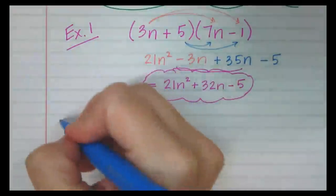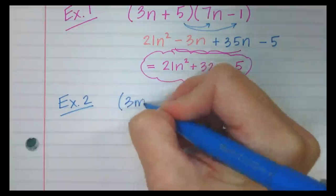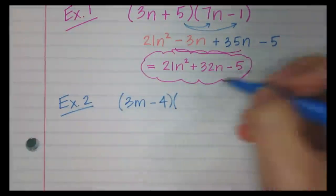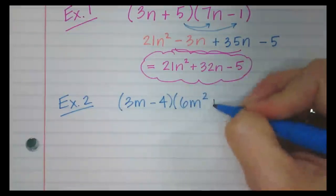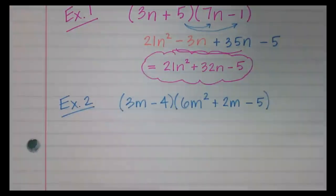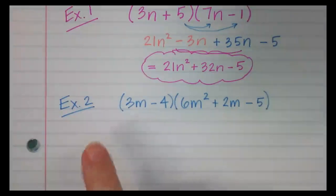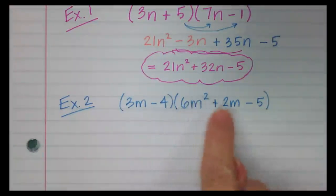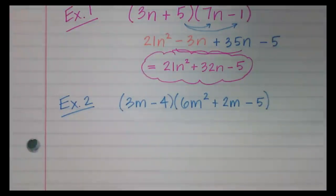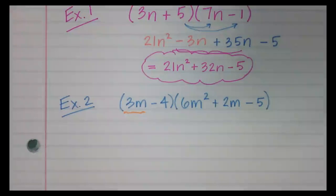So now let's move on to example 2. How about 3m minus 4, and let's multiply that with 6m squared plus 2m minus 5. This time we are multiplying a binomial and a trinomial. It really doesn't matter which order we go in because multiplication is commutative, meaning the order isn't important. So I'm going to distribute the first one to the second one, meaning I need to distribute the 3m first and then come back and distribute the negative 4. So we have distributive property applied twice.